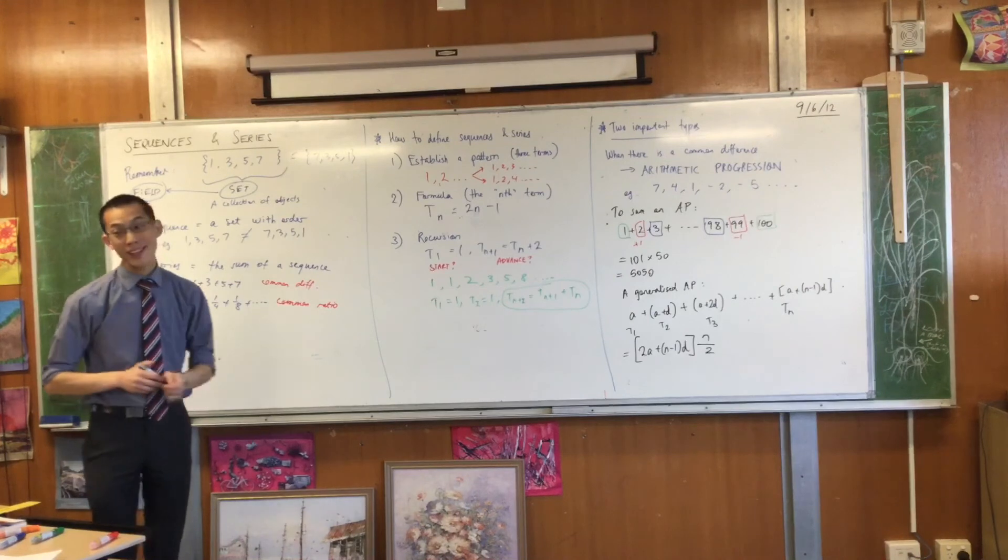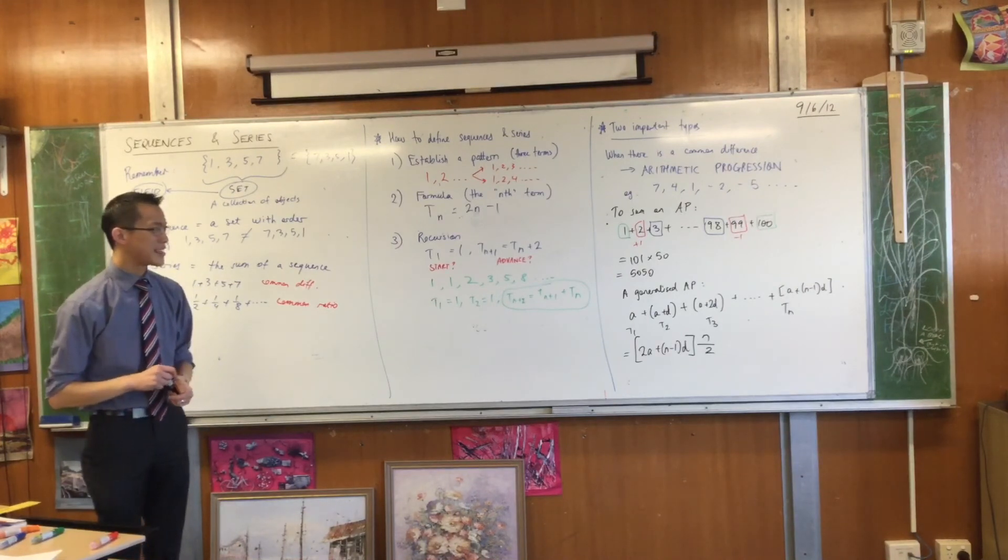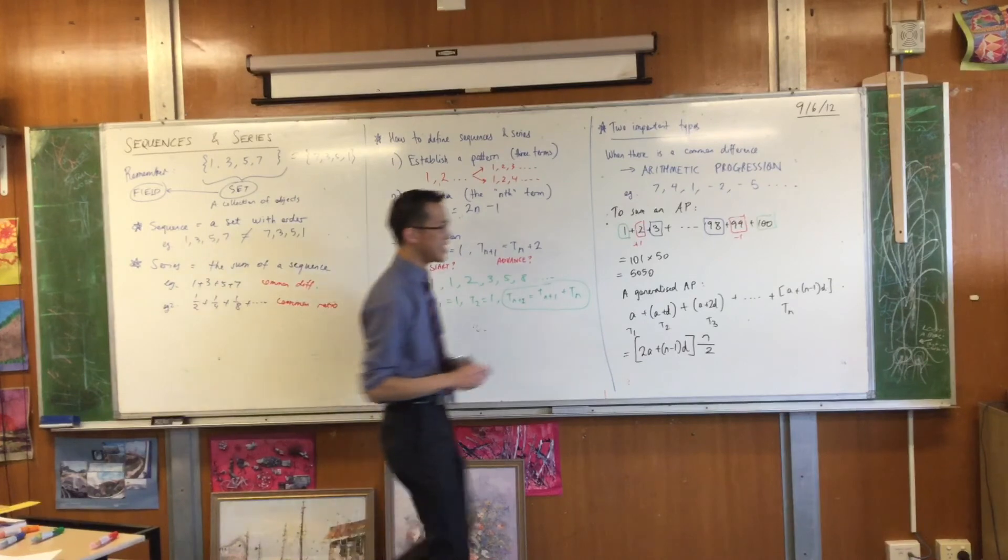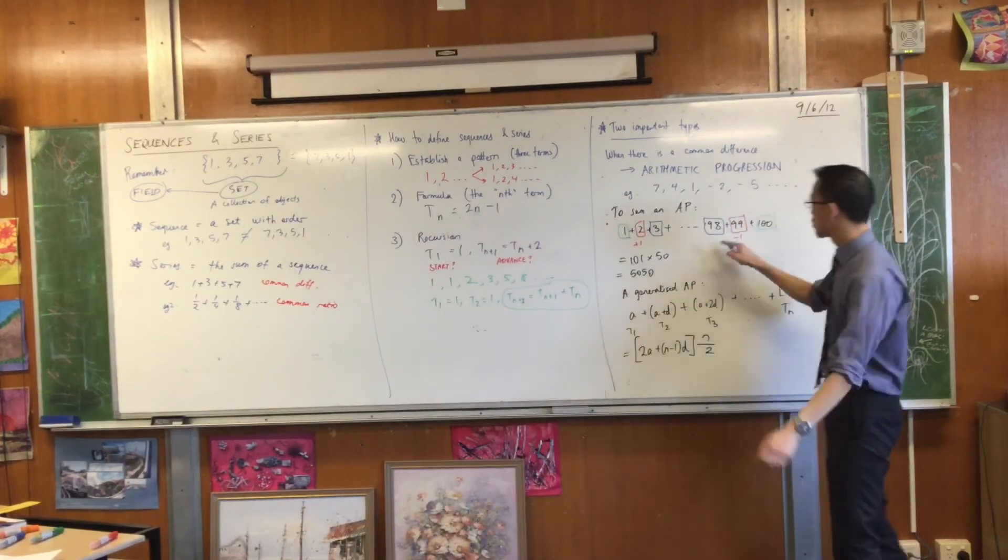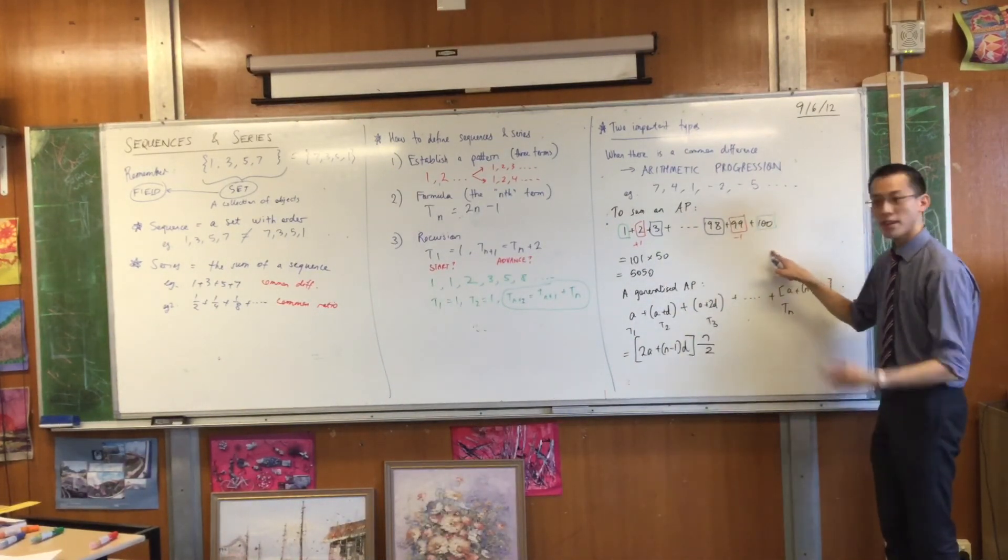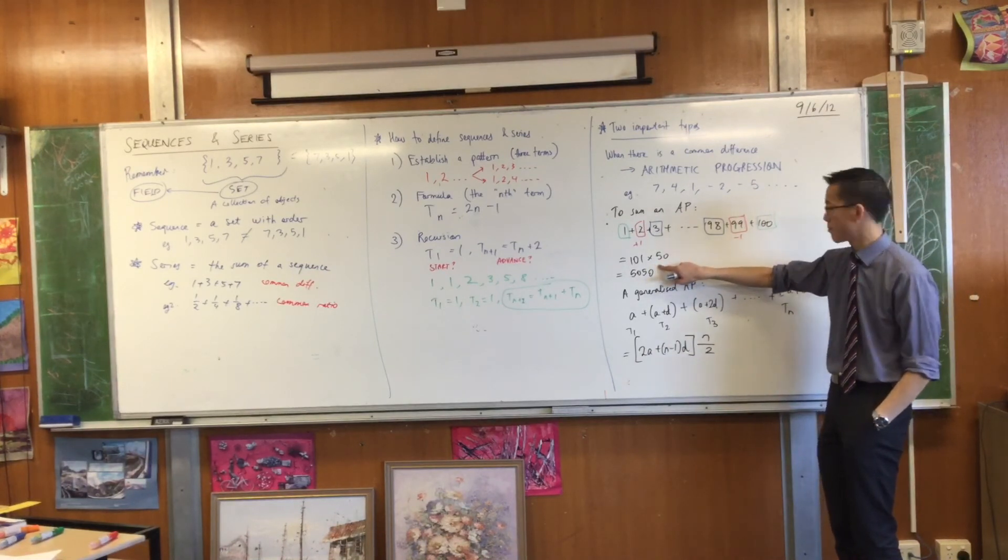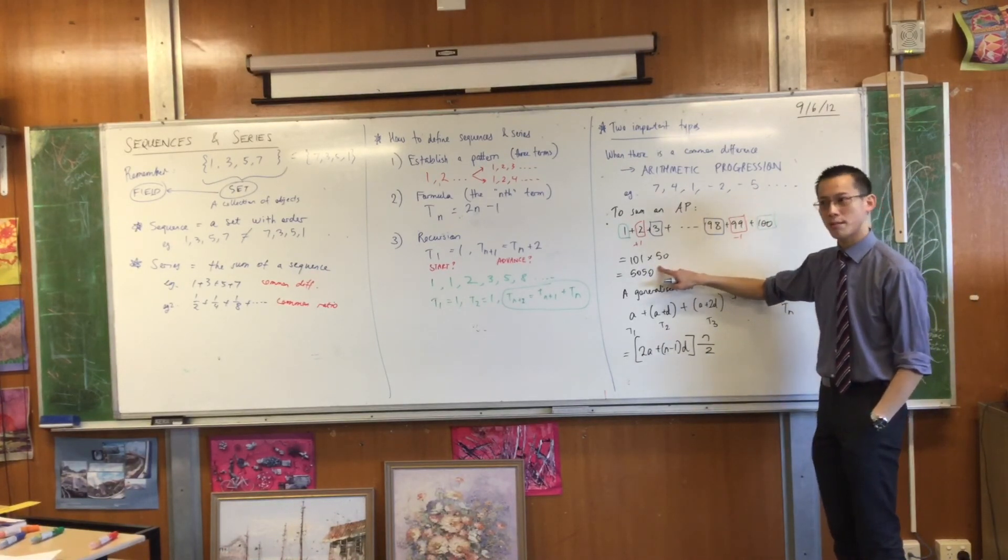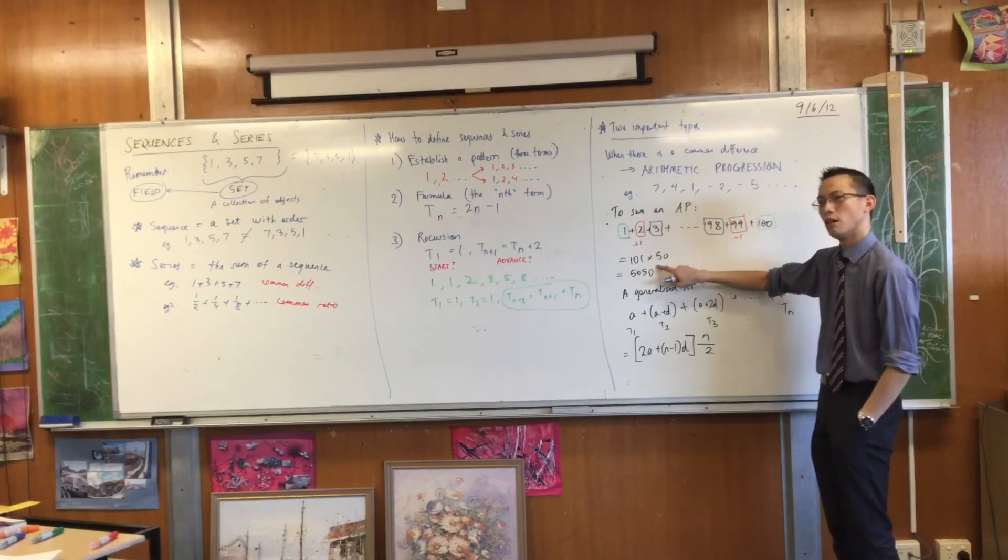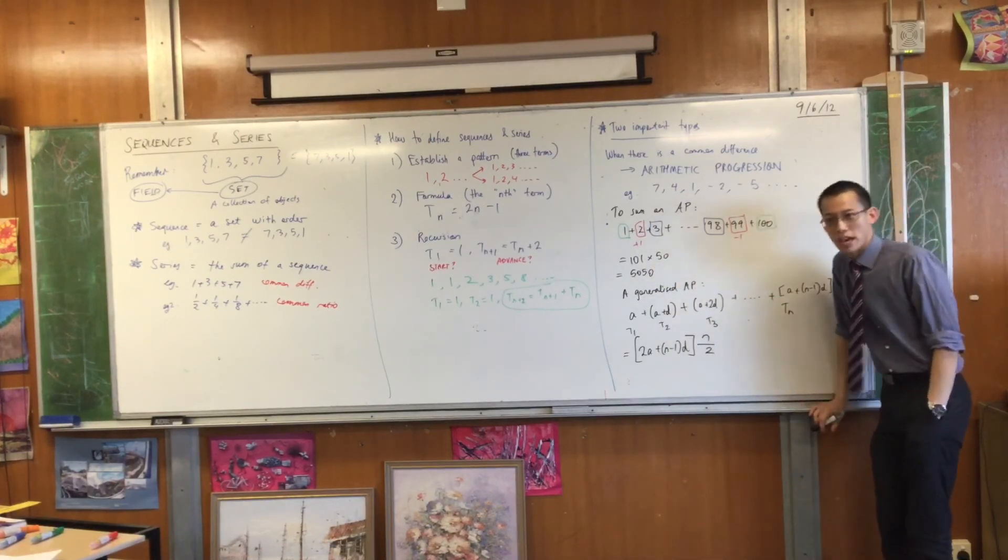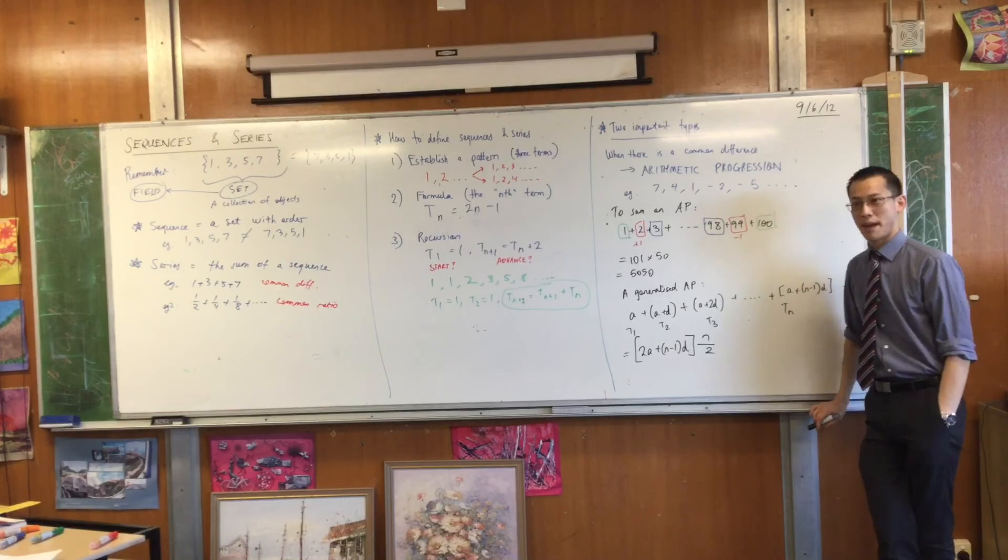Now, what's really lovely about this formula is that it actually solves a problem which we didn't even discuss before, which was, see this series here? Conveniently, you can pair up every term. You can pair everything up, right? But it doesn't take much to create a problem where you can't pair everything up. What could I do to this? What subtle change could I make that would make this un-pairable?